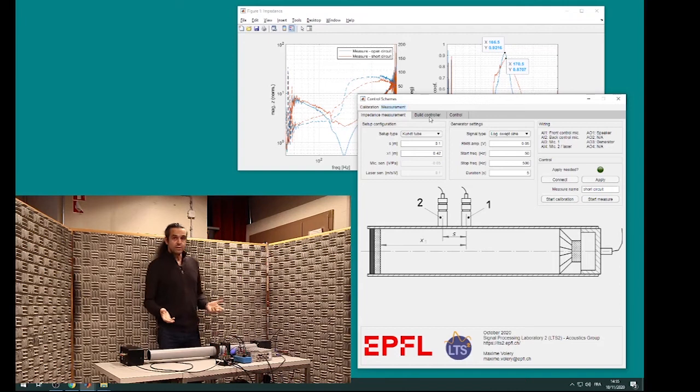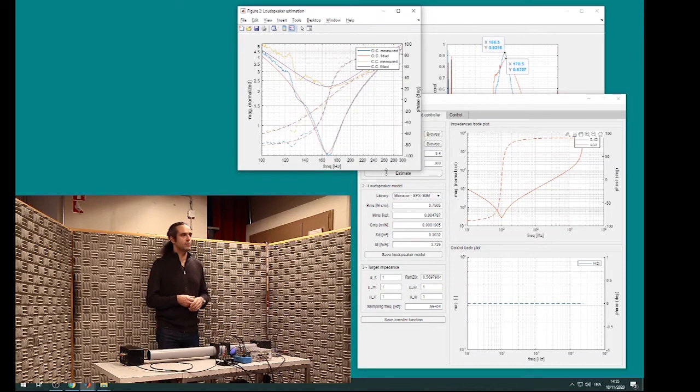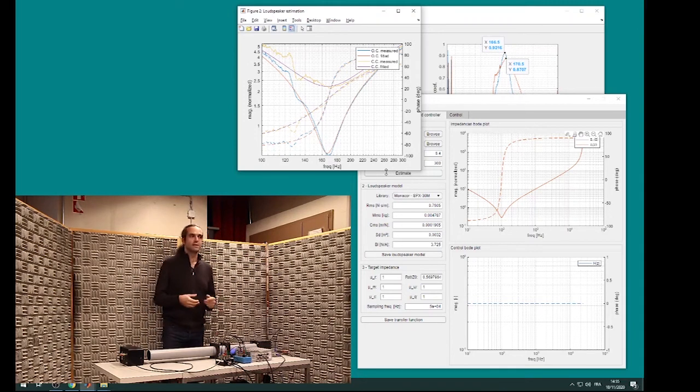Once we have done the two measurements of the open circuit and the short circuit electroacoustic absorber, passive electroacoustic absorber, we need to do the identification of the Thiele-Small parameters. For that we'll use a second interface that will download the two measurements and use curve fitting to estimate the parameters: resistance, compliance, mass, BL factor, etc. And we get those estimations that you see on the new figures that pop up, which also provides estimation of new values for the resistance, the compliance, the mass, and the force factor.